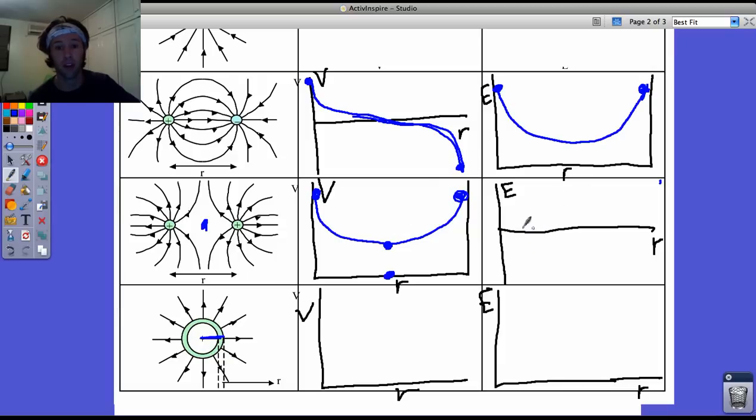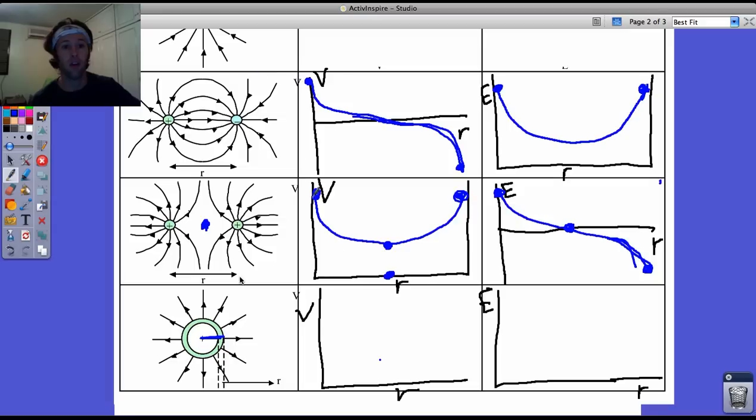And if you look at electric field strength, over here near the positive, where r is 0, you have super high field strength in one direction. When you're over here, the field strength is the other direction. And right in the middle, as you probably know, there's 0 electric field. So, you end up with a shape like this.